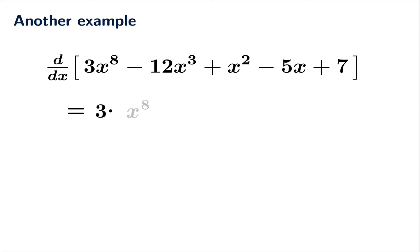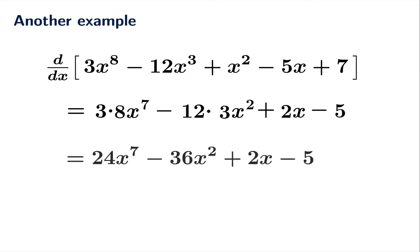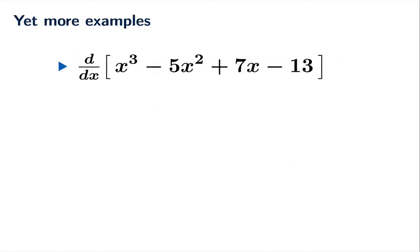Minus 12 times the derivative of x cubed, plus 2x the derivative of x squared, and then what's the derivative of negative 5x? It's just negative 5, a line with slope negative 5. And of course the derivative of the constant function 7 is just 0, so we don't even need to write that at all. And this simplifies quite nicely. There's our derivative.